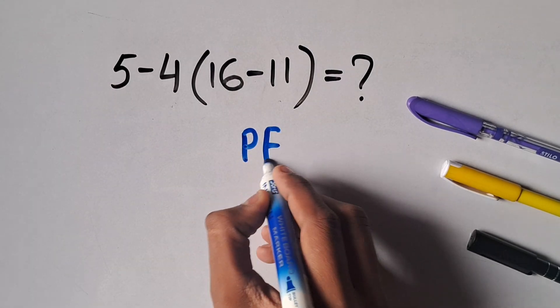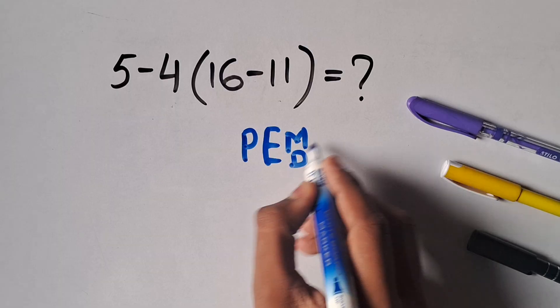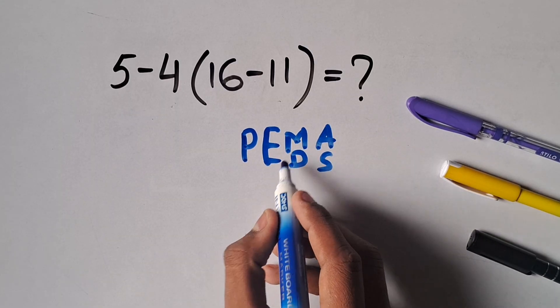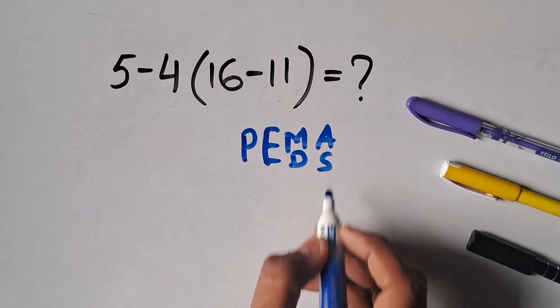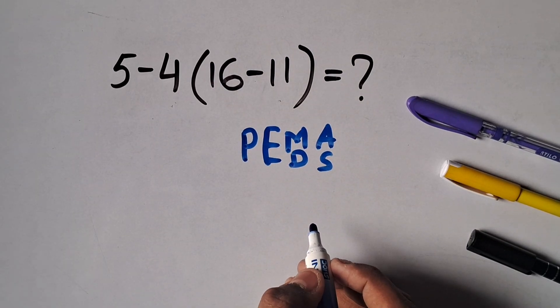E stands for exponents, M and D stand for multiplication and division, and A and S stand for addition and subtraction. We have to solve from parentheses to subtraction, from left to right.